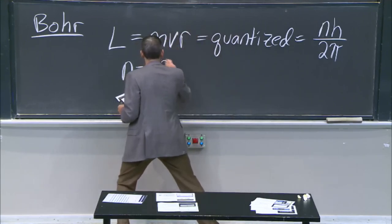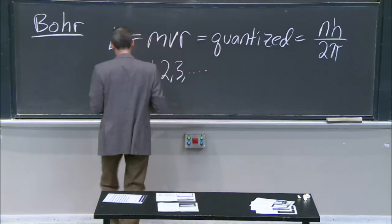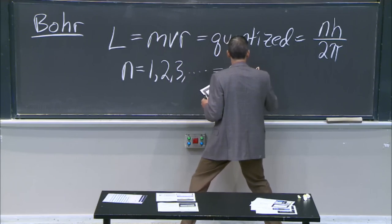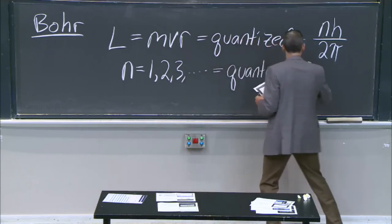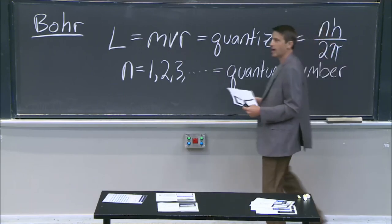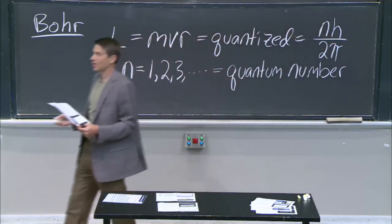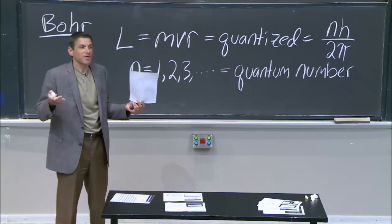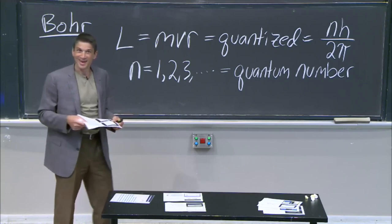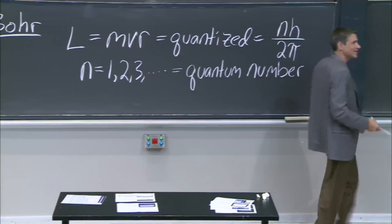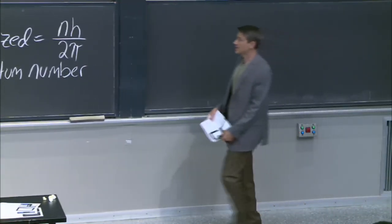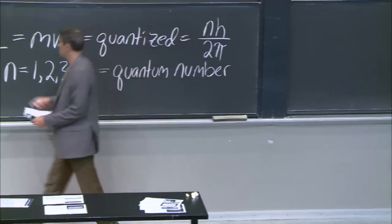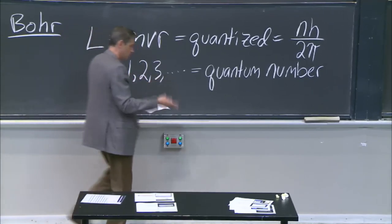n had to be some integer — that's quantization. We're going to call it a quantum number. It's our first quantum number, and we've only known each other a week. Quantum number, because it's a number that counts quantumness — quantization. This is how you get the quantization: it's a quantum number.